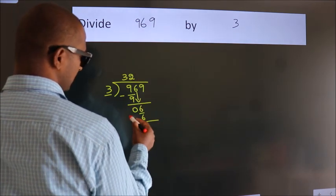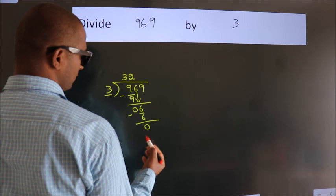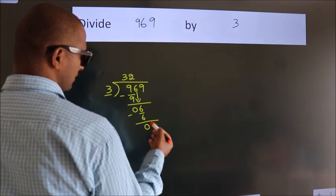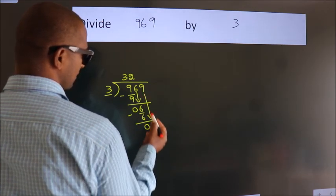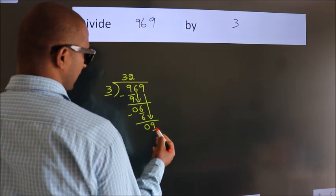Now we subtract. We get 0. After this, bring down the beside number. So 9 down. So 9.